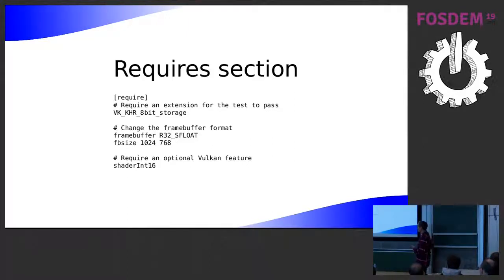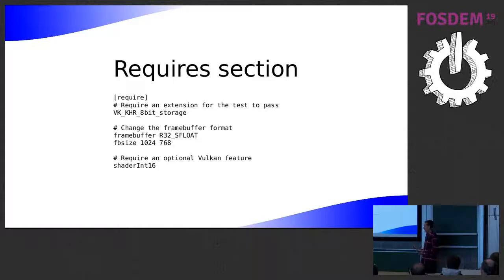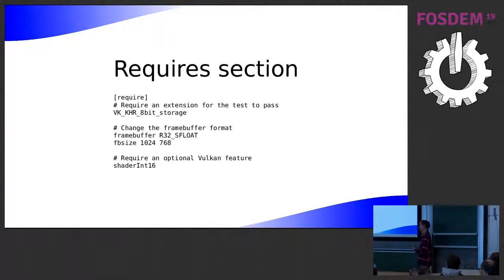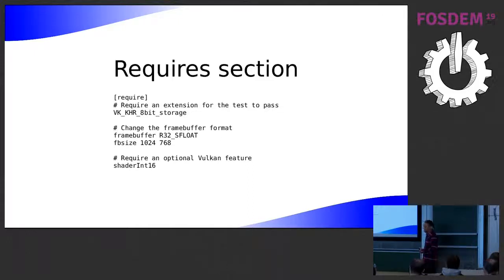Unlike GL, as well as extensions, Vulkan has features — even things that are in core, a lot of things are optional. There's a struct to check for and enable features. I took that struct and converted all its members into commands. If you list any member of that struct, it will check that the feature is available and then enable it. You can also set the format of the frame buffer using the format enums and the size.